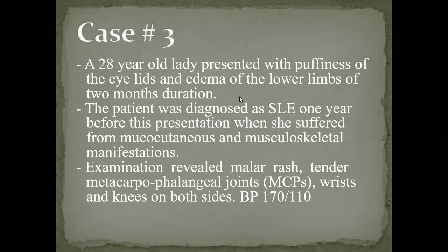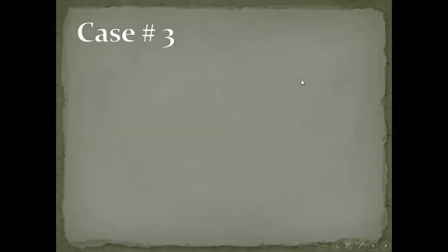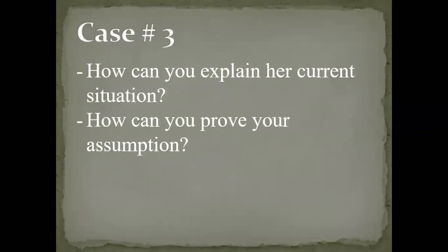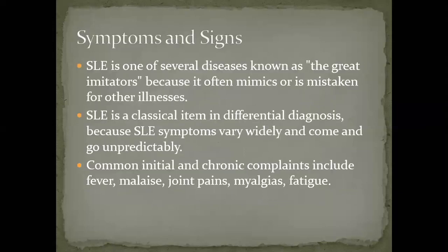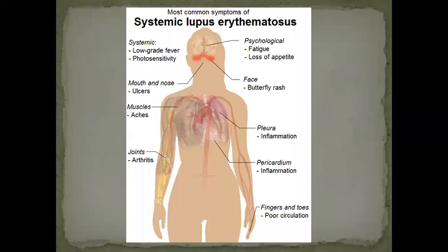These are three case scenarios commonly encountered in practice. We need to explain the current situation, prove the assumption, and manage each case. Lupus is called the great imitator — the great actor — because any symptom or sign in the body can be attributed to systemic lupus erythematosus.